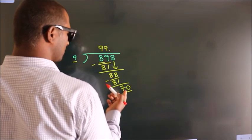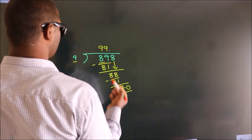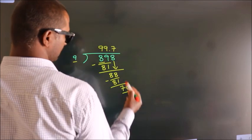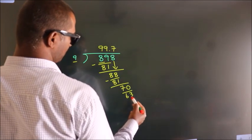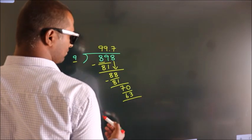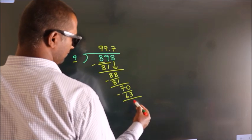A number close to 70 in 9 table is nine 7's are 63. Now we subtract, we get 7.